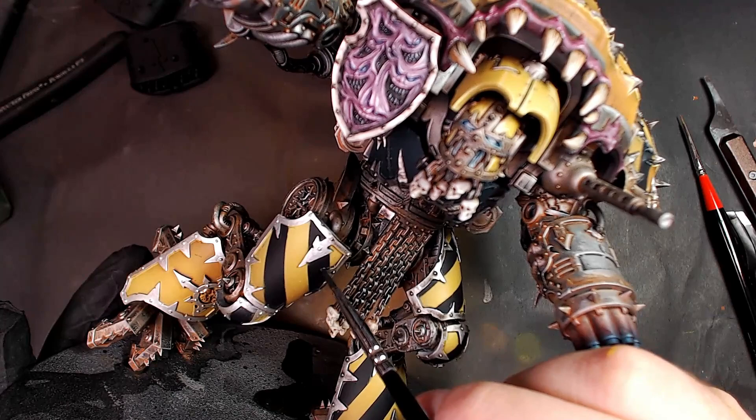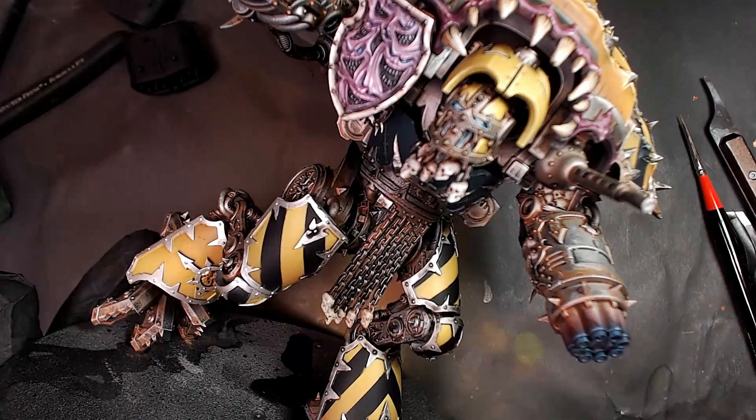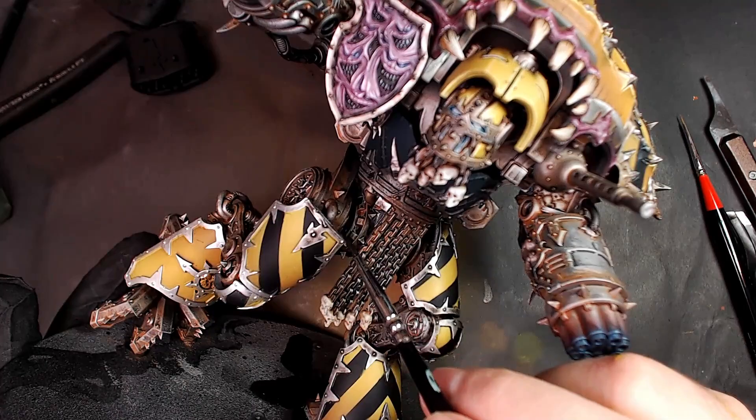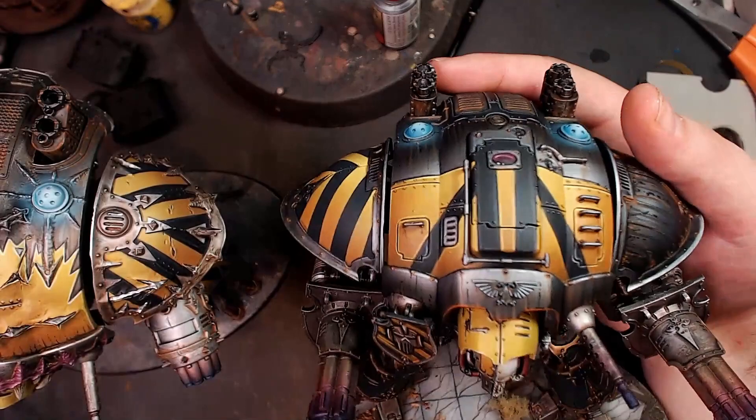This is a Kytan with an extra Kytan arm swap with a Forge World Chaos Knight, man. I am feeling this. Anyway guys, do me a favor, if you like what you see here, you like these fresh looking kits, you like following along with these projects, hit me up on Patreon.